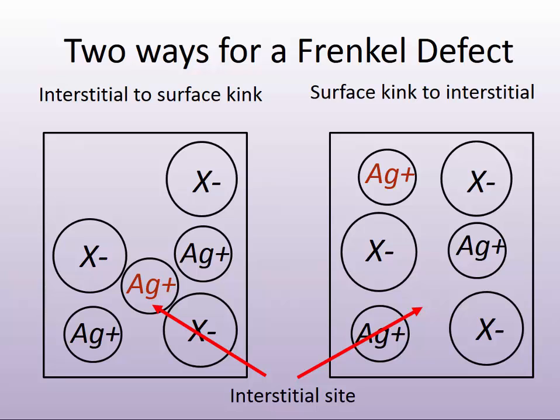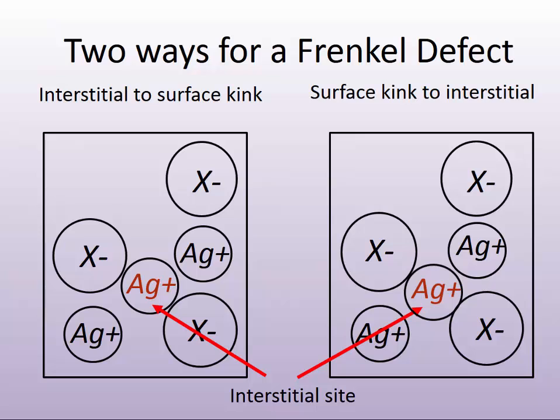There are two ways in which a Frenkel defect can occur. A Frenkel defect involves mobile ions moving into the interstitial areas of a crystal. We can have a surface kink to an interstitial movement of silver, and this makes the net surface of the crystal negative in charge, as shown in the diagram on the right.